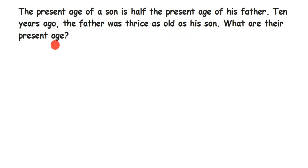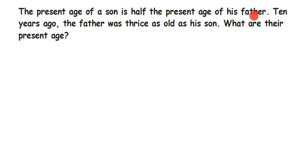How do we solve this? They are talking about the age of the son in terms of the father's age. So if I have to write down the son's age, I should know the father's age first. That's why we assume the father's age to be x — because the son's age is related to the father's age, specifically half of it.